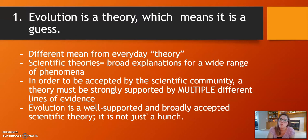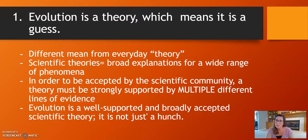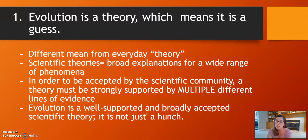Misconception one: evolution is a theory, which means it is a guess. When you use the word theory in everyday life, it's more like a guess — like 'I have a theory why the cafeteria food is so bad.' But in the science realm, a theory is based on observations and countless facts. Scientific theories are broad explanations for a wide range of phenomena, and to be accepted by the scientific community, a theory must be strongly supported by multiple lines of evidence. Evolution is a well-supported and broadly accepted scientific theory. It is not just a hunch.